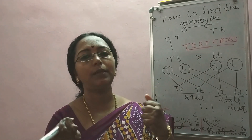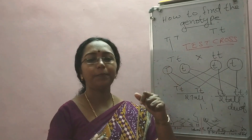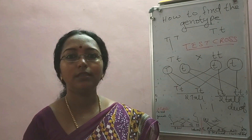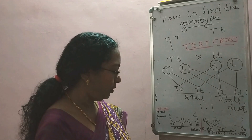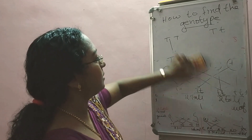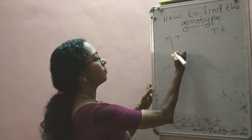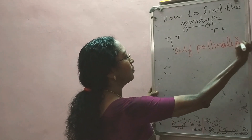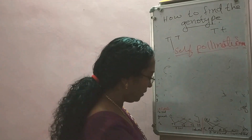So that is one method of testing the genotype: test cross. There is also another method which is very simple — self-pollination of the plant. One method of testing genotype is test cross; another method is self-pollination.